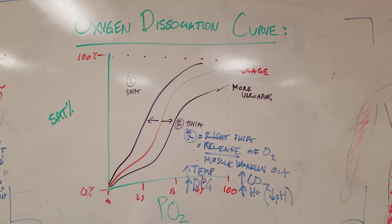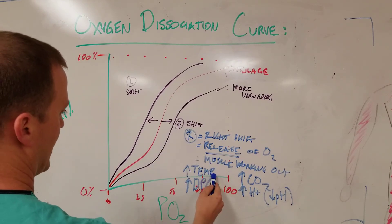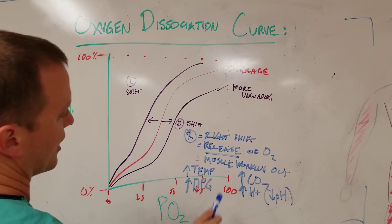And then a higher DPG or BPG, which a lot of people get tripped up on. But just think of it as an acid. So if we're shifting to the right, it's because of a muscle that's working out. So it's hot, it's got carbon dioxide, and it's acidic or it has a low pH.